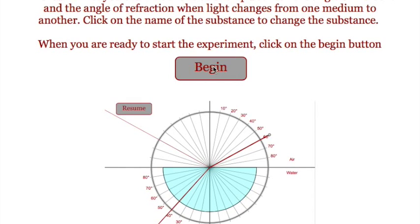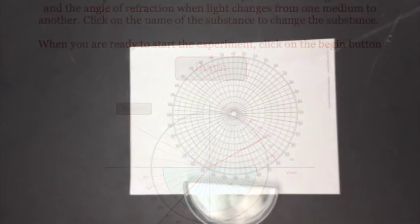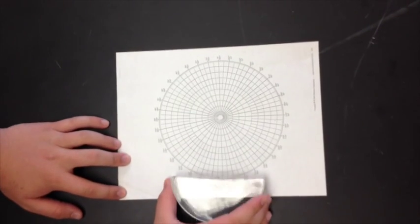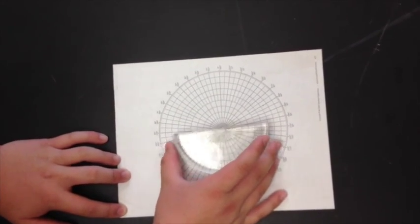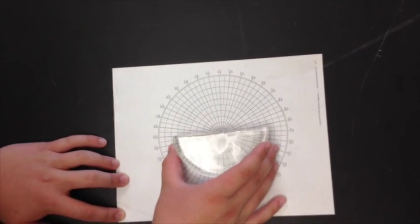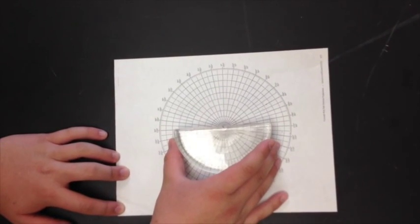This simulation is a version of the refraction lab that students have been doing for years involving a semicircular tank filled with a fluid placed on circular graph paper.